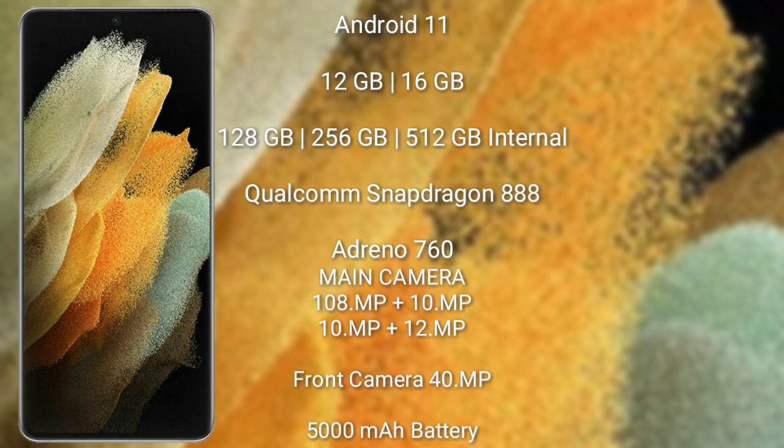Samsung Galaxy S21 Ultra features a triple-camera setup: 108MP plus 10MP plus 10MP plus 12MP, and its front camera is 40MP.